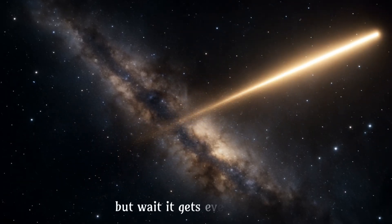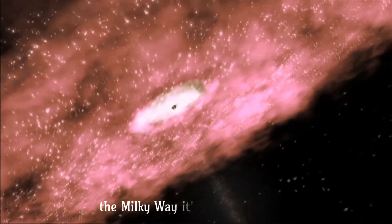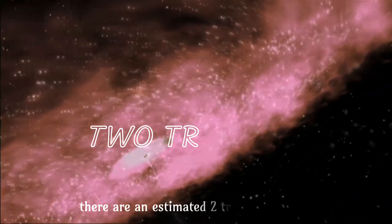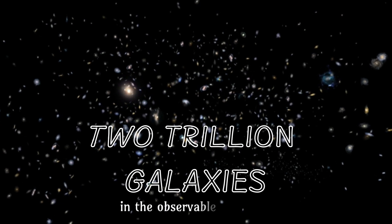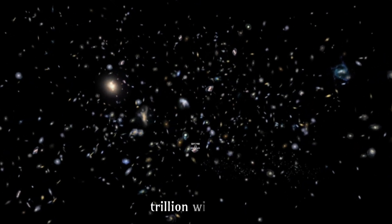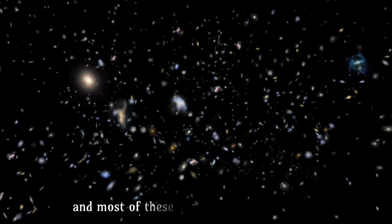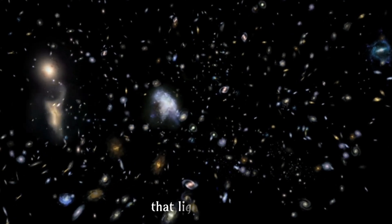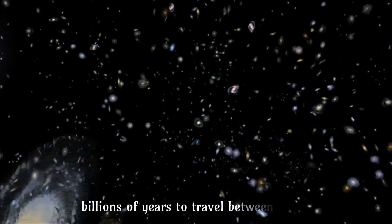But wait, it gets even crazier. The Milky Way is just one galaxy. There are an estimated 2 trillion galaxies in the observable universe. Trillion. With a T. And most of these galaxies are so far apart that light takes billions of years to travel between them.